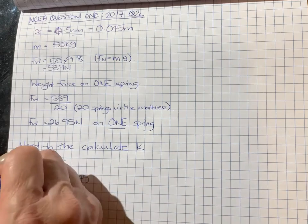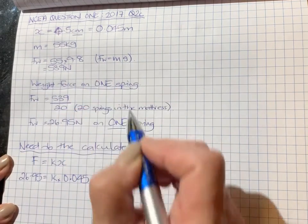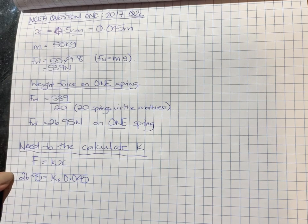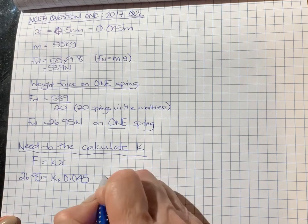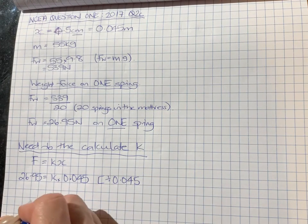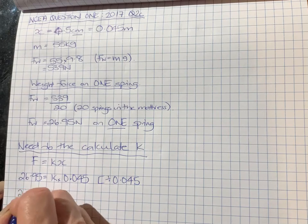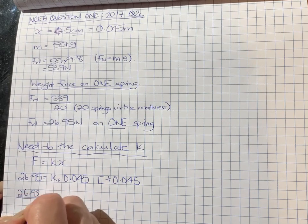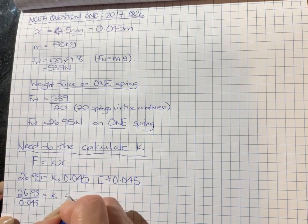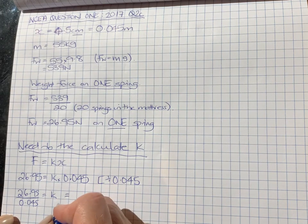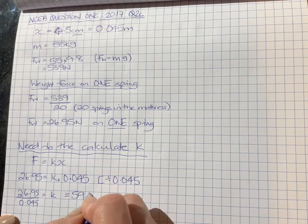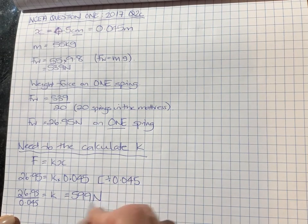So we've got 26.95 equals k times 0.045. So I'm just going to do some underlining here so it keeps it separate. So we've found the weight force on one spring, and we're just about here to find out k. So we're going to divide both sides by 0.045. 26.95 divided by 0.045 gives us k, which is 599 newton meters.